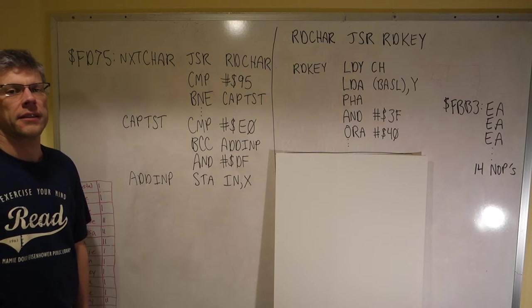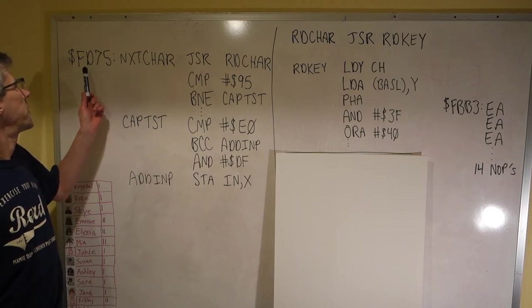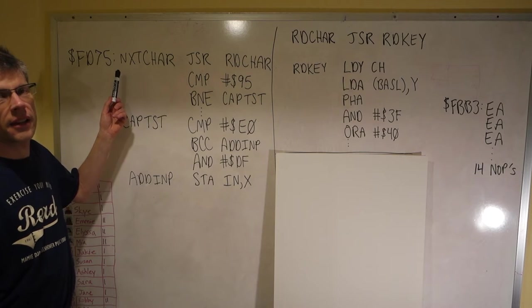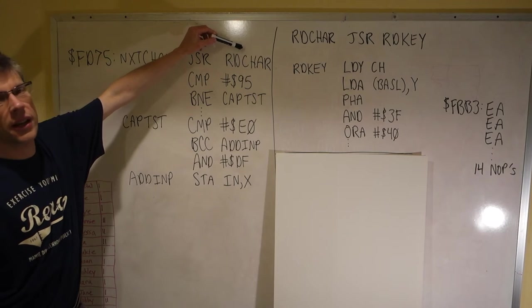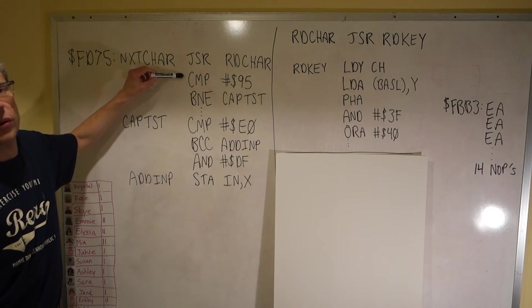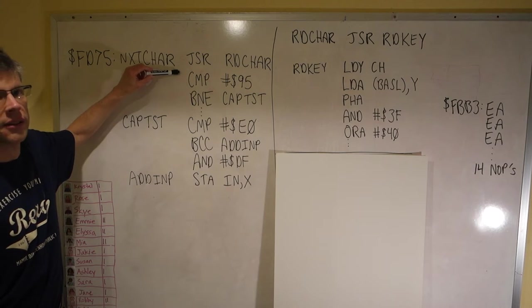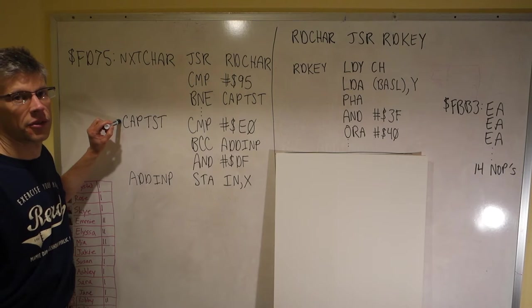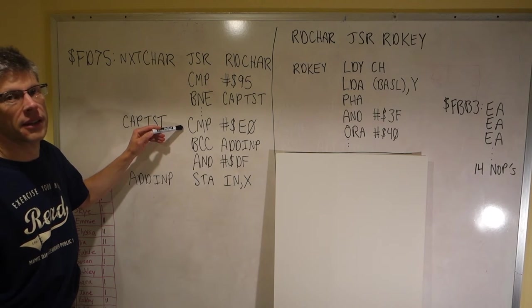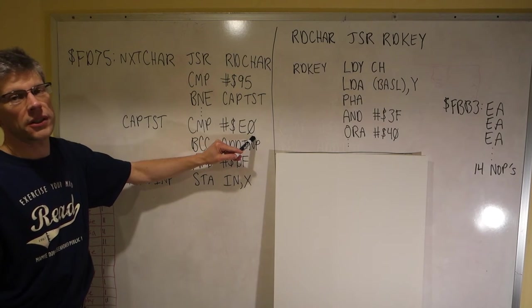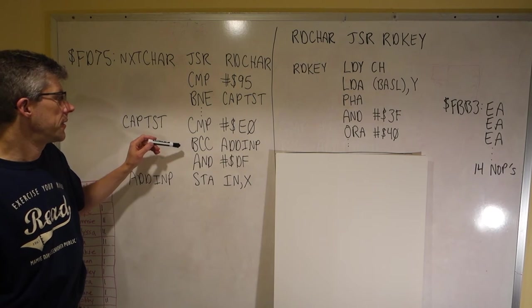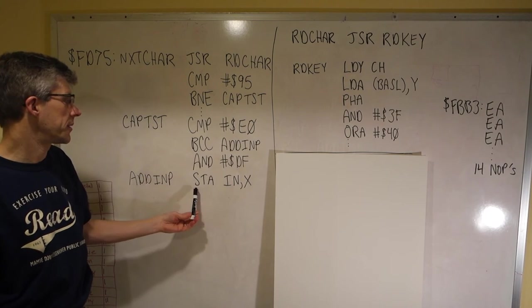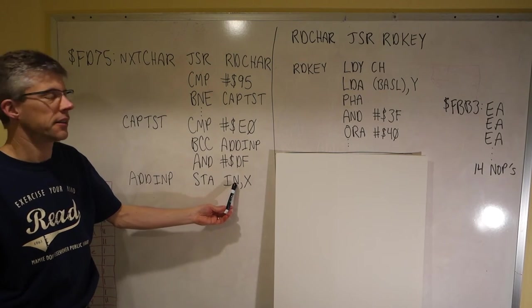Let's take a look at the system monitor code. If we look at address FD75 which is in the F800 ROM, we can see this is where the next character routine is. This first starts out doing a jump to a subroutine called read character, then it looks for a control-U character which would be the advance to the right, and if it doesn't see that it jumps to this routine called cap test — this is the one that's causing us all the trouble. Basically what this does is it compares the key that was just entered with E0 which is 224.